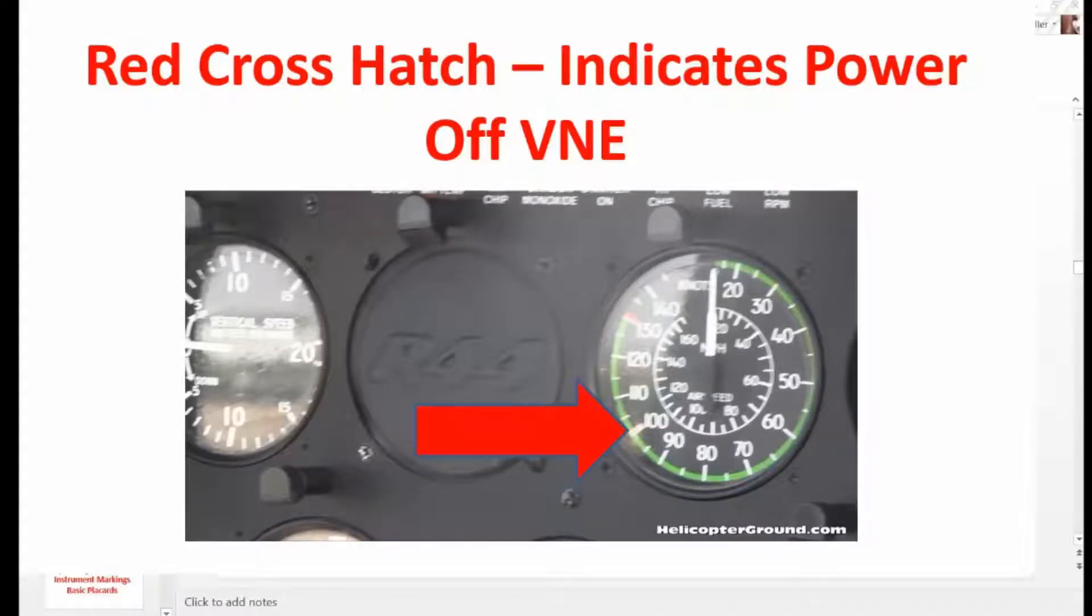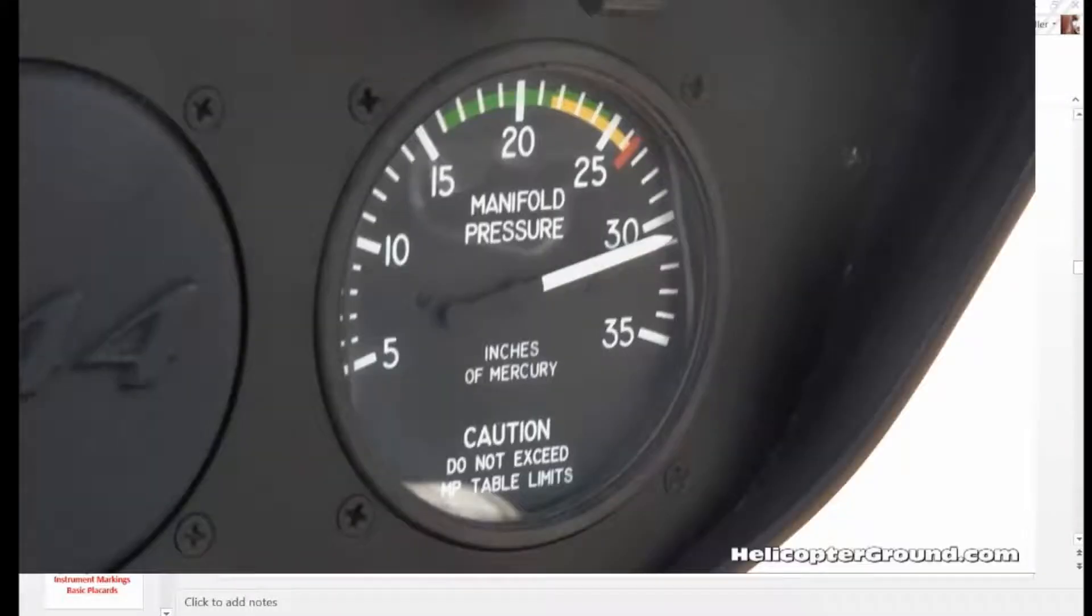So you have a red crosshatch on the airspeed indicator indicates power off VNE. Here's an example of green, yellow, and red range on an instrument. In this case, it's a manifold pressure, but it could be any gauge. Green is good. Yellow, you need to figure out what's going on. In limitation, you don't want to exceed. If you do, get back in the yellow and then green range as soon as possible and notify your mechanic what happened.